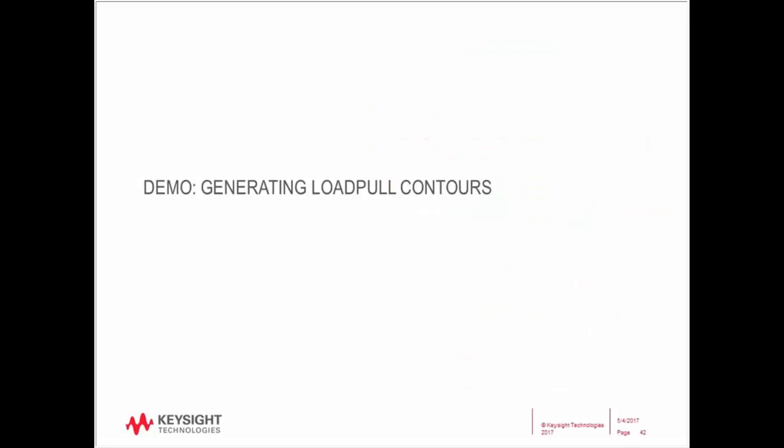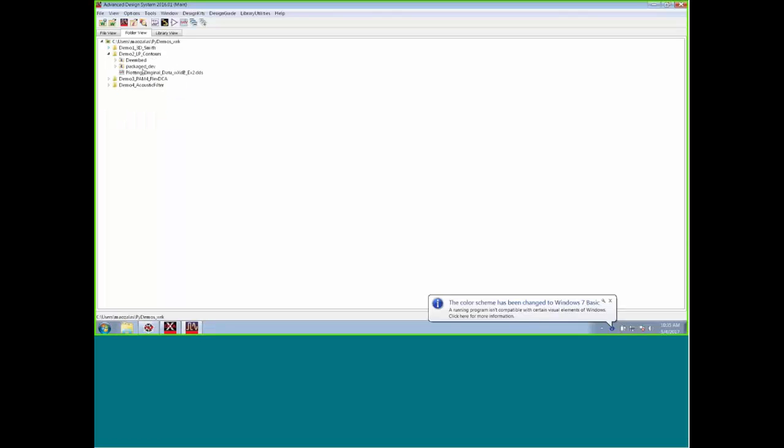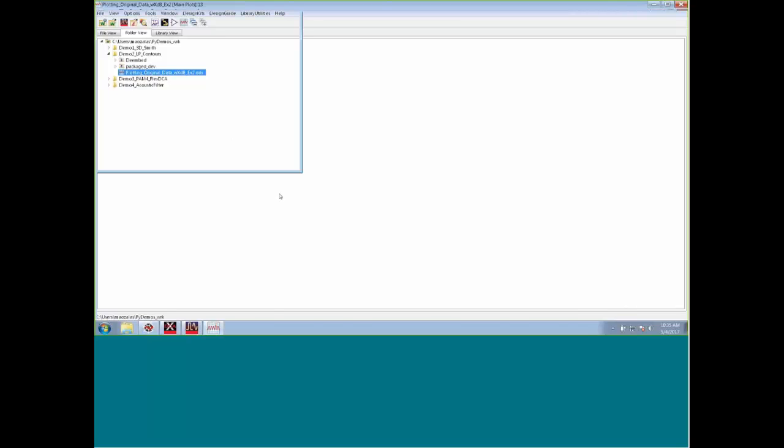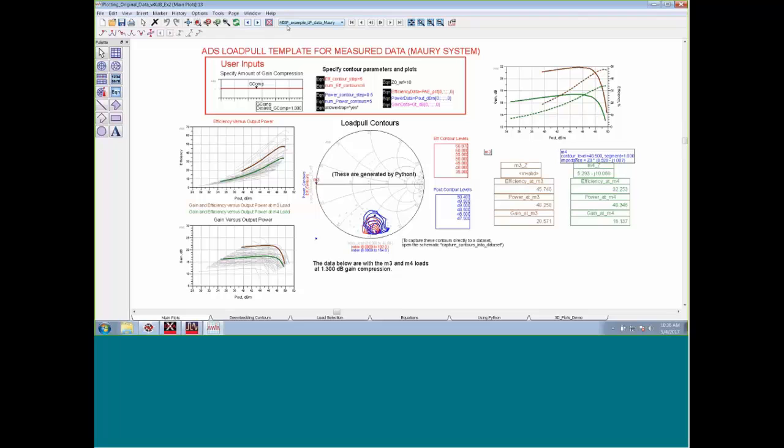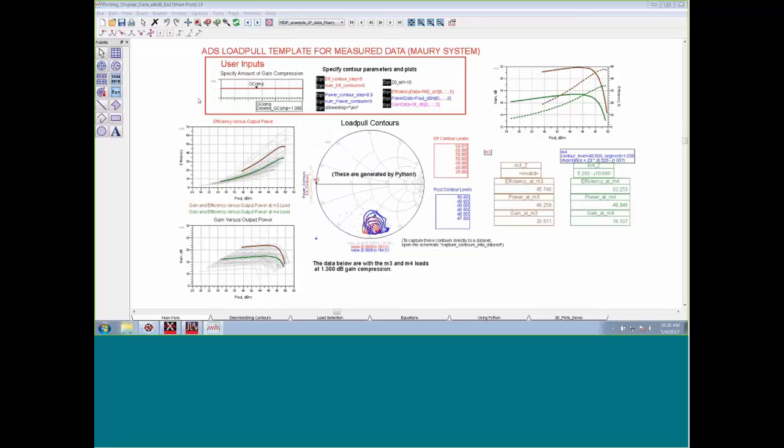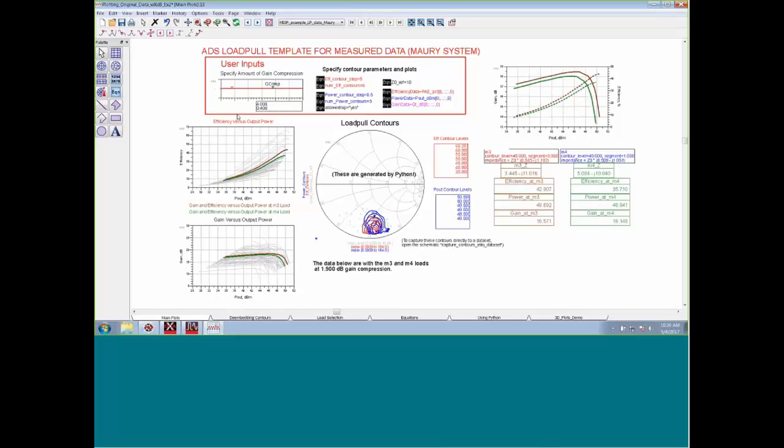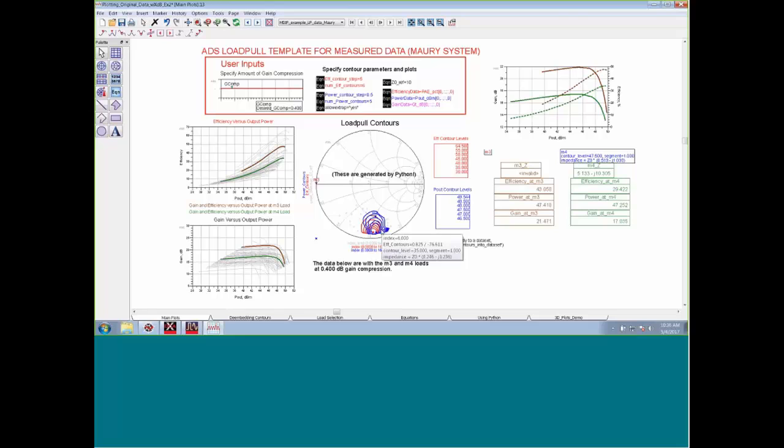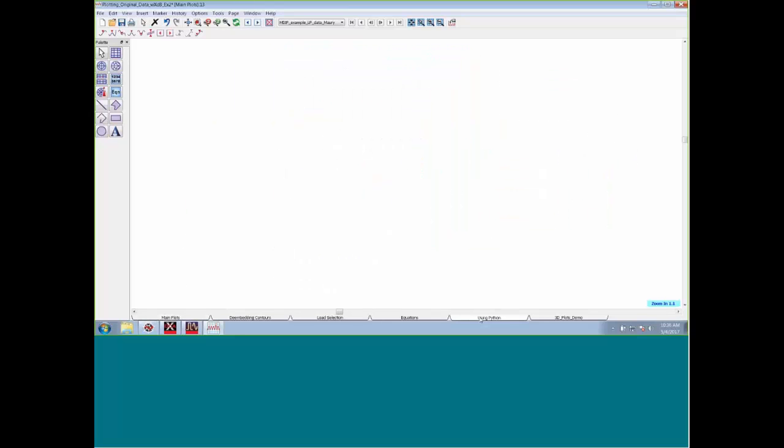So let me demo that for you. Here I've got a data display, and this has data from a measurement system that I've imported. This is from a Maori system. The data that came in from Maori is just all these columns of data, and they're all indexed. This is what the result is. It's a data display template. When I move the marker, everything just changes. This is different gain compression values. All of these different plots are updating based on those gain compression values. The only thing that's different about this than any other load pull data display template is that these contours here are generated over in Python. It just happens in the background. You don't even see it. When I move the marker, everything just updates and it happens automatically.